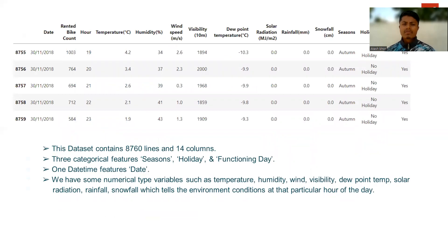This dataset contains 8,760 rows and 14 columns. There are three categorical features: season, holiday, and functioning day. One date-time feature: date. We also have numerical type variables such as temperature, humidity, wind speed, visibility, dew point temperature, solar radiation, rainfall, and snowfall, which describe the environmental conditions at that particular hour of the day.